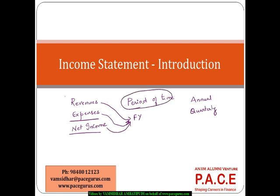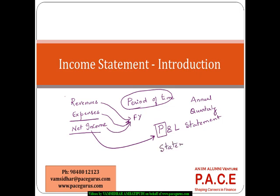Over a period of time, whatever are the revenues and the expenses, those are typically taken care of as part of the income statement. The income statement is also called a profit and loss statement because the net income is nothing but the net profit or net loss that comes up after subtracting the expenses from the revenues — otherwise also called the statement of earnings.